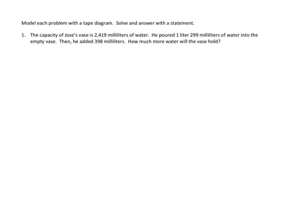The first problem I'm going to do is problem number one from the homework set. That problem reads as follows. And remember our strategy is to read, then draw, then write. So let's read. The capacity of Jose's vase is 2,419 milliliters of water. He poured one liter, 299 milliliters of water into the empty vase. Then he added 398 milliliters. How much more water will the vase hold? Well, now we've done the reading.